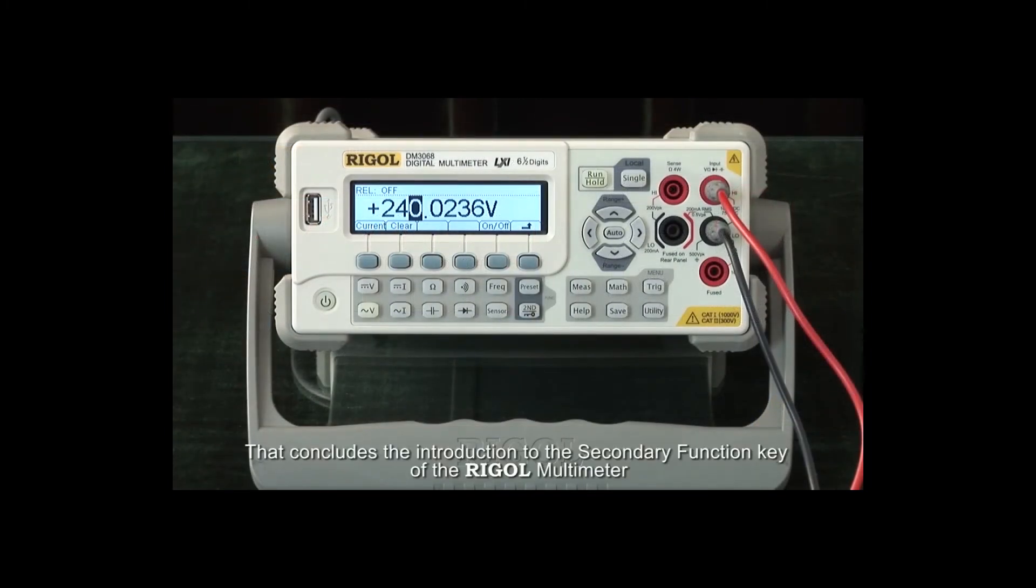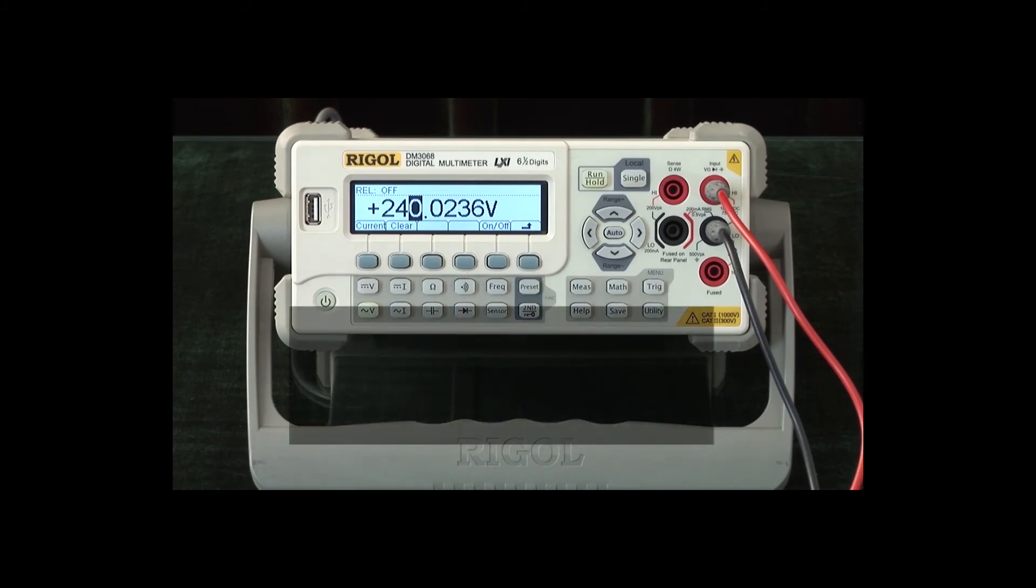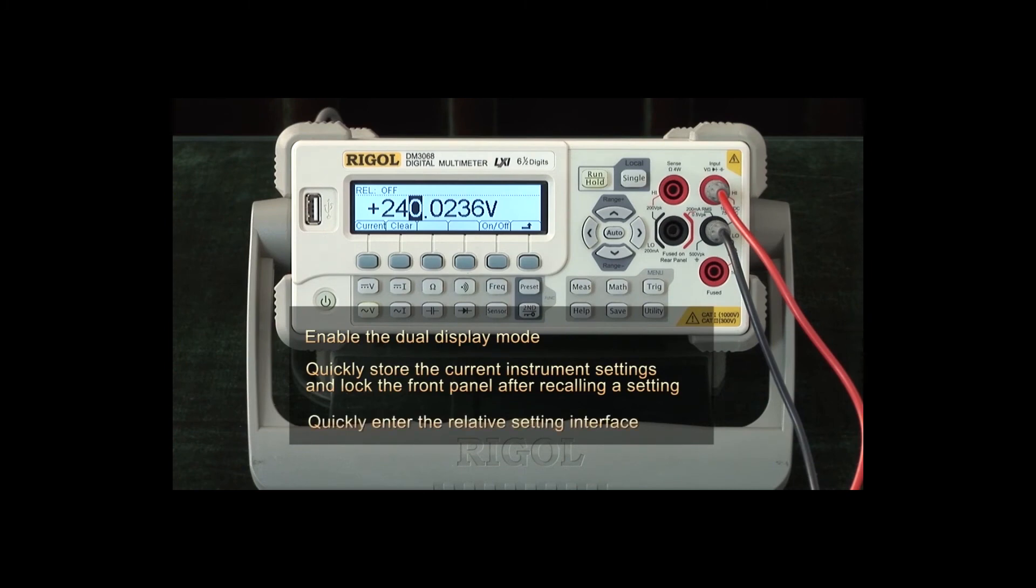That concludes the introduction to the Secondary Function Key of the Rigol Digital Multimeter. The key points are enable the dual display mode, quickly store the current instrument settings, and lock the front panel after recalling a setting, and quickly enter the relative setting interface.